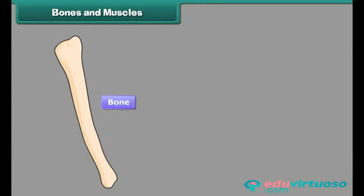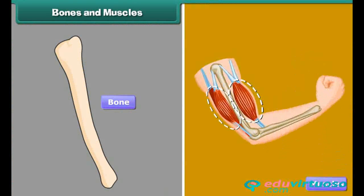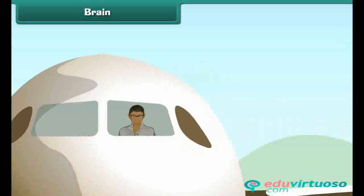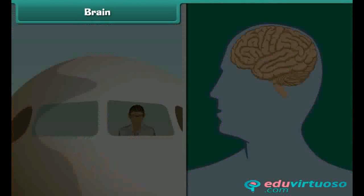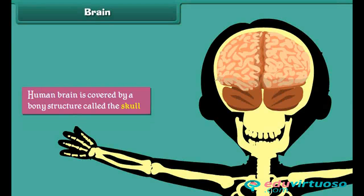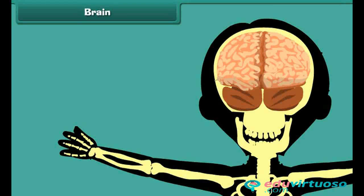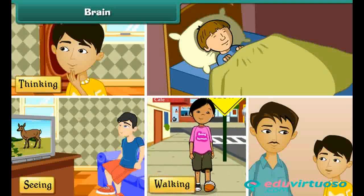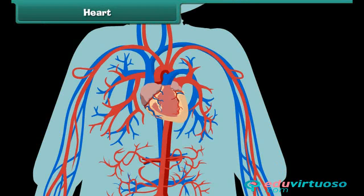Bones alone cannot make us move — muscles attach bones to one another and facilitate movement. Just as the pilot is the boss of an airplane in flight, the human brain is the boss of the human body. The human brain is covered by a bony structure called the skull, and it controls all the activities of the human body, such as thinking, seeing, walking, speaking, and even sleeping.